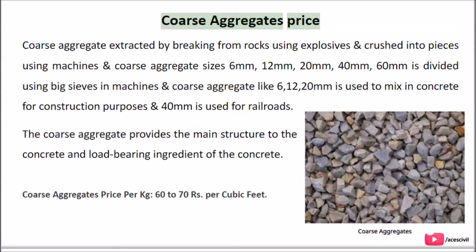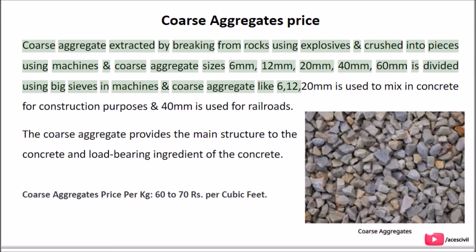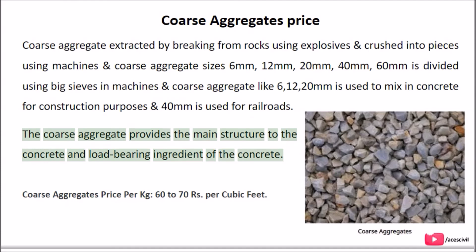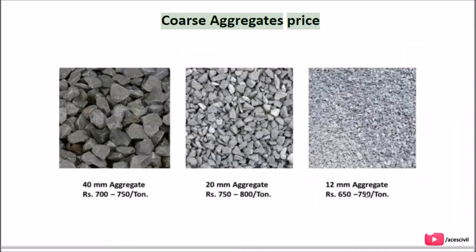Coarse Aggregates Price: Coarse aggregates are extracted by breaking rocks using explosives and crushed into pieces using machines. Coarse aggregate sizes such as 6 mm, 12 mm, and 20 mm are used to mix in concrete for construction purposes, while 40 mm is used for railroads. Coarse Aggregates Price: Rs. 60 to 70 per cubic feet.